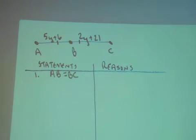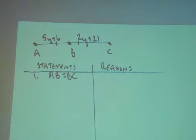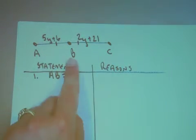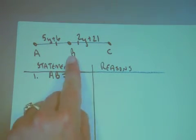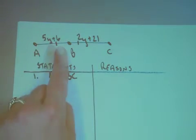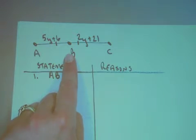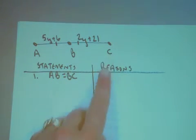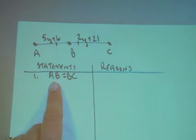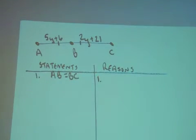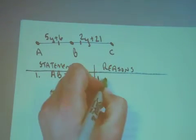Here is an example of a two-column proof when we're looking at a geometric picture. I have a segment AC which is divided into segments AB and segment BC. Notice my congruence marks — I have 5y plus 6 for the length of AB and 2y plus 21 for the length of BC. So the first thing I know is that the length of AB is equal to the length of BC, because of the definition of congruent segments.